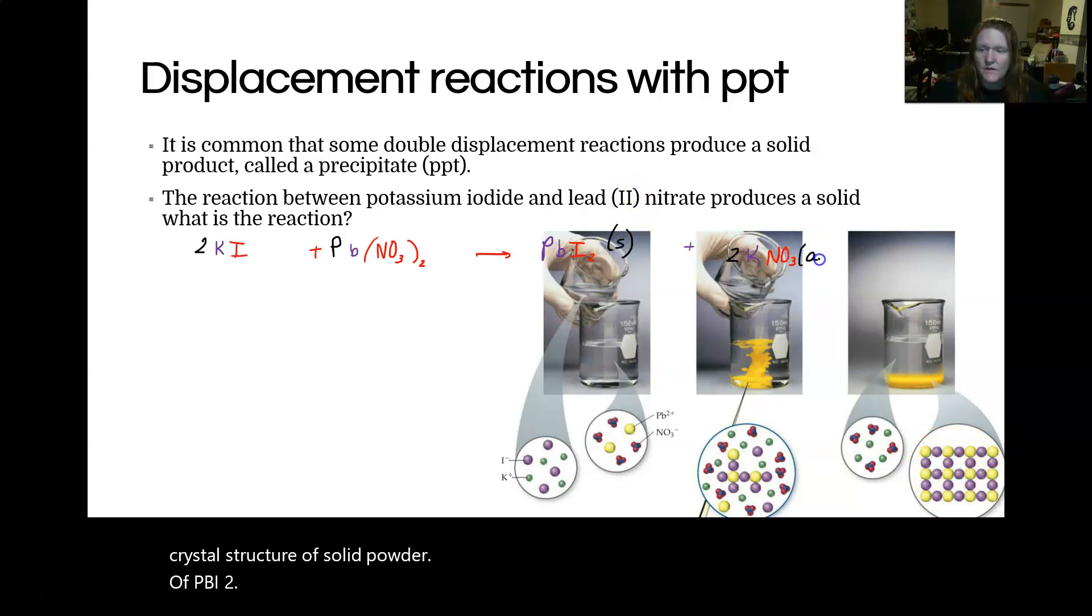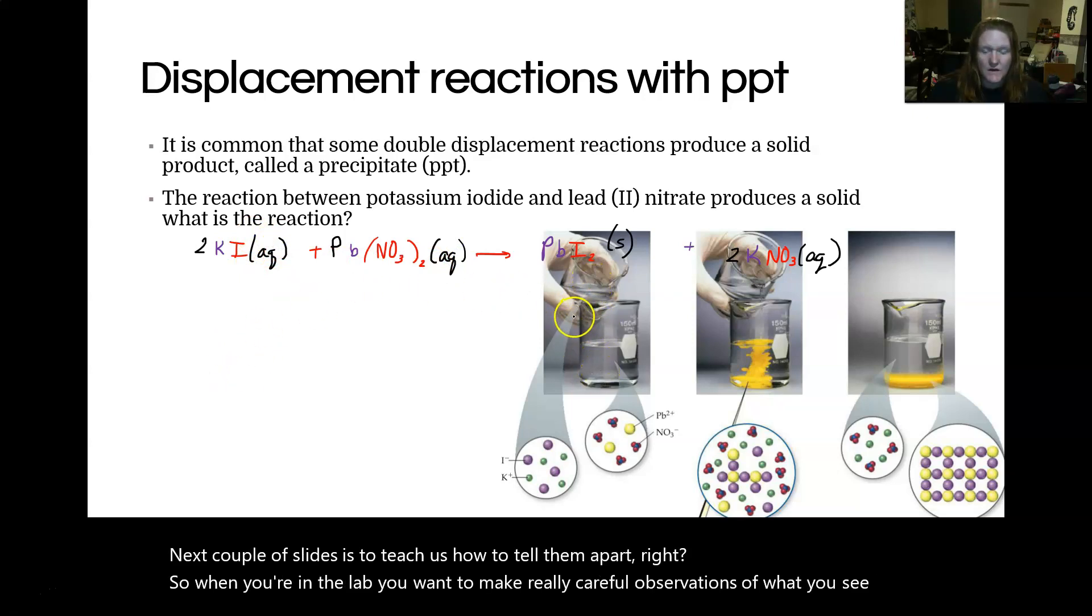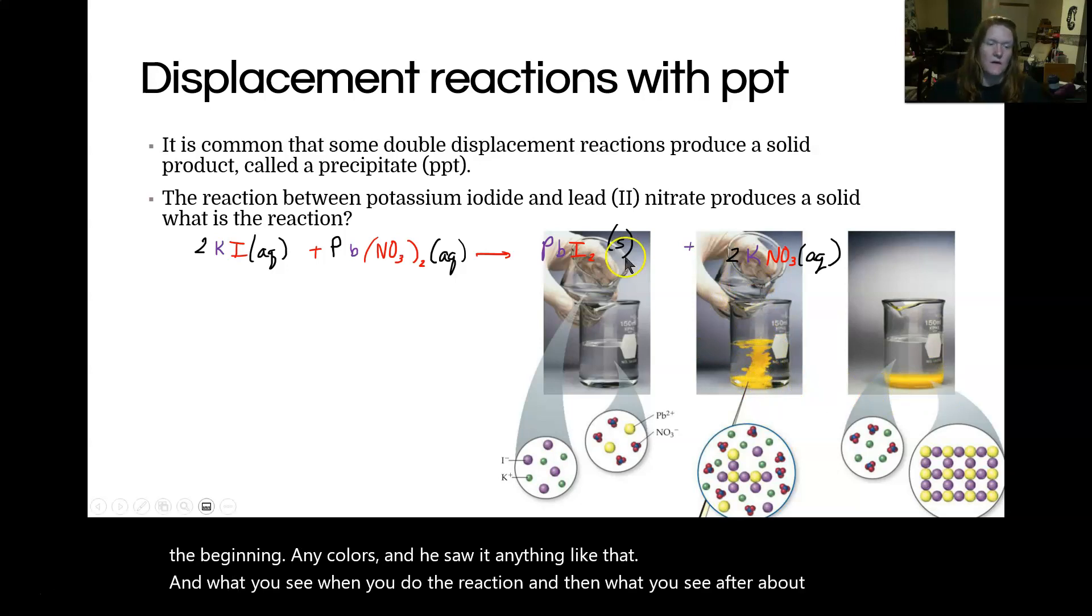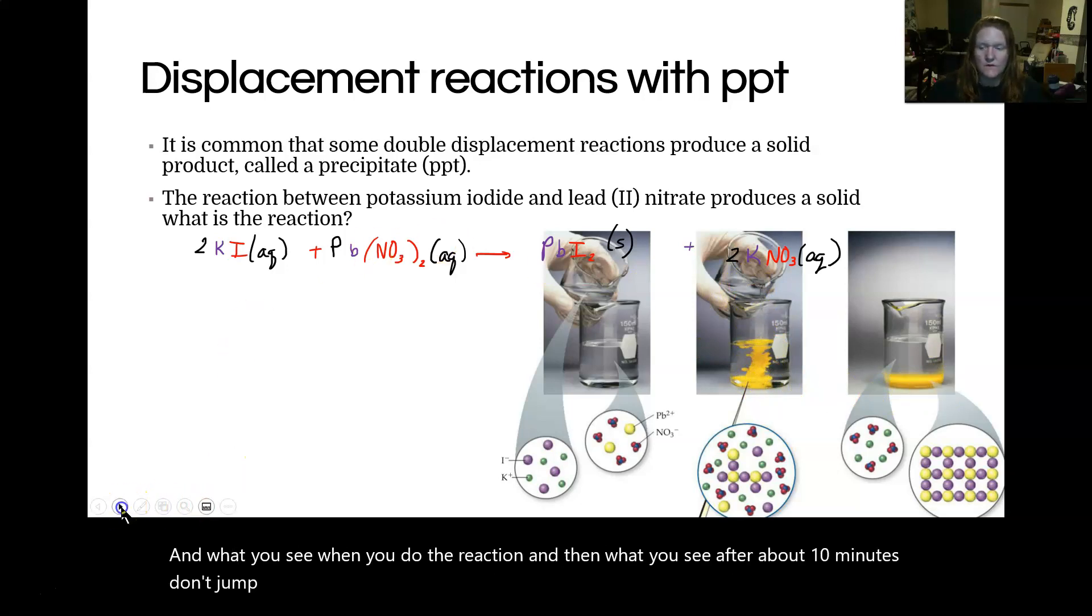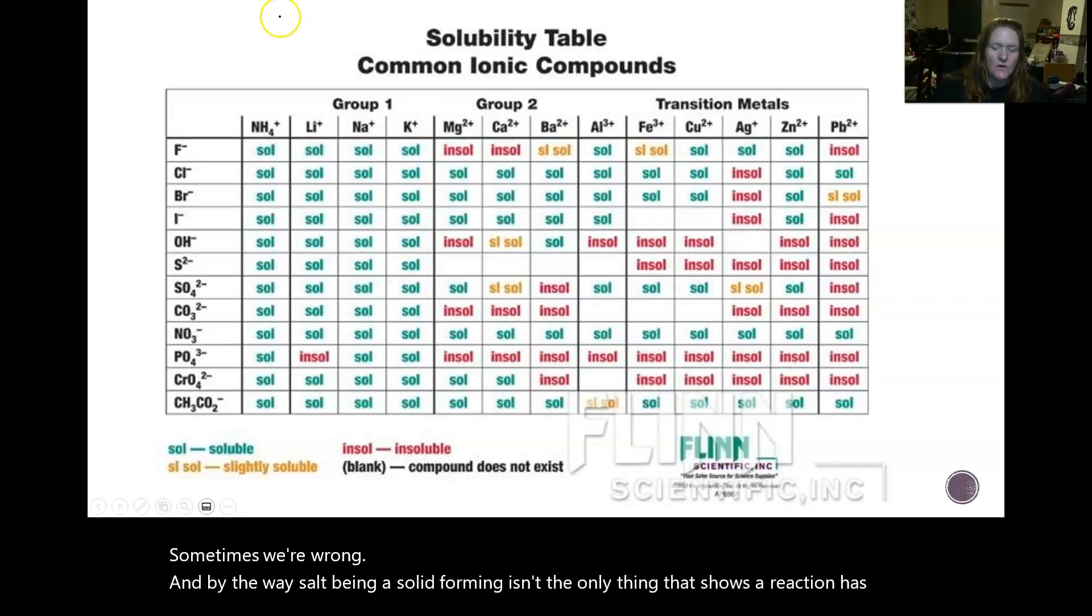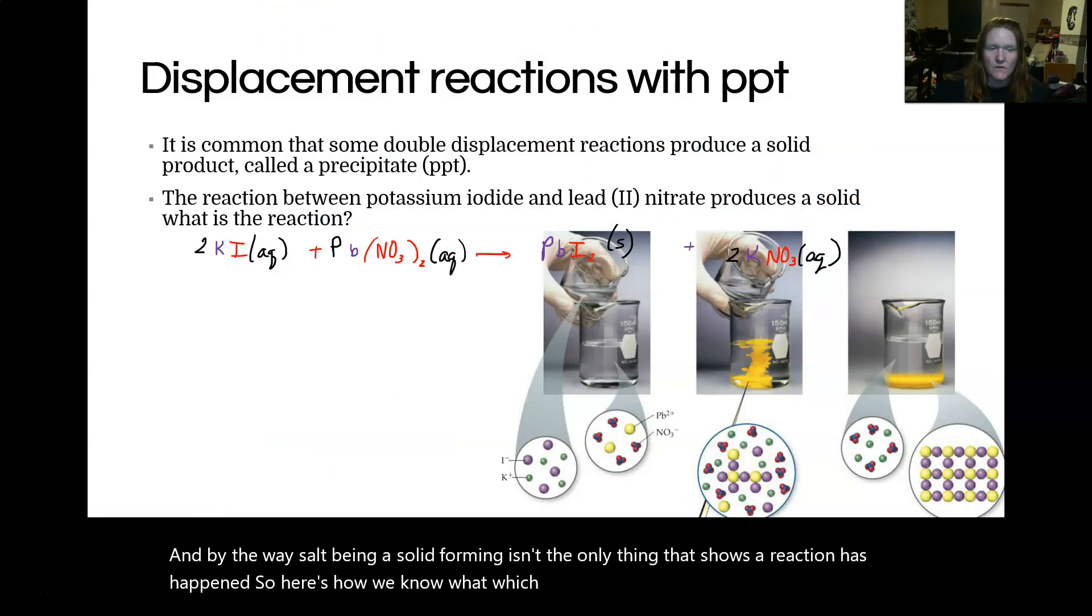So the point of this next couple of slides is to teach us how to tell them apart. When you're in the lab, you want to make really careful observations of what you see in the beginning, any colors, any solid, anything like that, and what you see when you do the reaction, and then what you see after about 10 minutes. Don't jump to conclusions because sometimes we're wrong. And by the way, being a solid forming isn't the only thing that shows a reaction has happened. So here's how we know which products are solid, which things are aqueous.